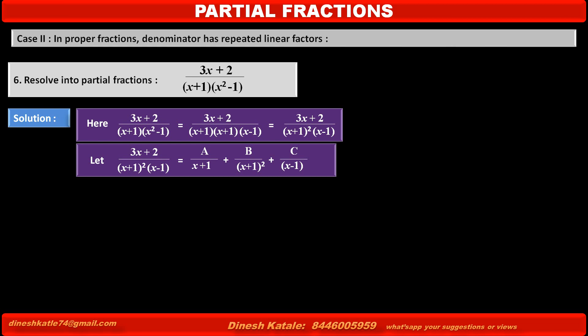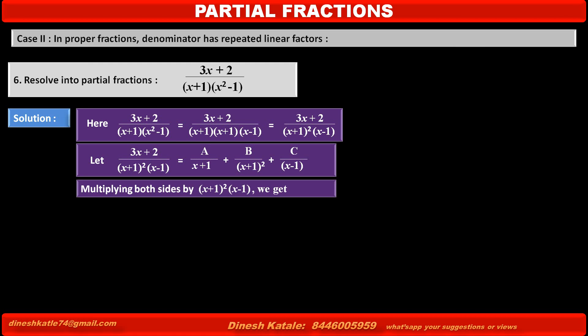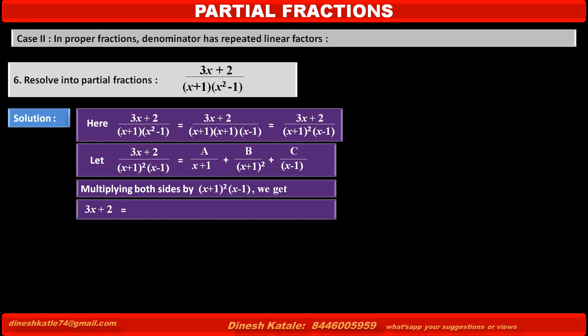To remove the denominators of each term, multiplying both sides by their LCM (x + 1)² into (x - 1), we get: 3x + 2 = A(x + 1)(x - 1) + B(x - 1) + C(x + 1)². Consider this as statement number 1.